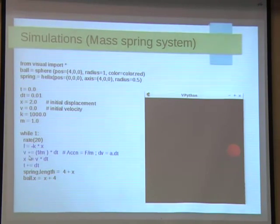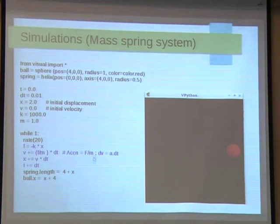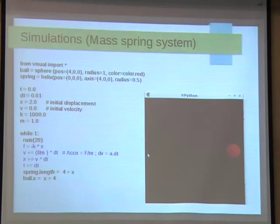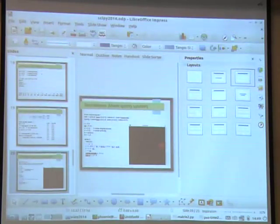What it does is clear: you import the visual module, define two objects — a sphere and a spring helix — set initial conditions: time equals zero, delta-t, initial displacement, velocity, spring constant k, and mass. In the loop you do a simple integration: F = -kx, acceleration is F/m, dv = a*dt, so v = (F/m)*dt, then integrate again to get the next position. From the initial position you step to the next position after delta-t — two straightforward steps. It is not the best algorithm but it works. Then you update the coordinates.